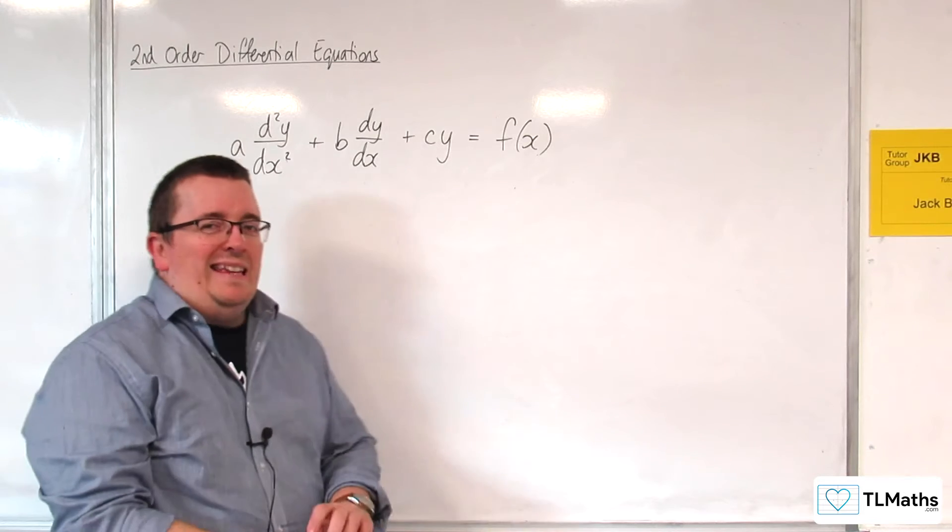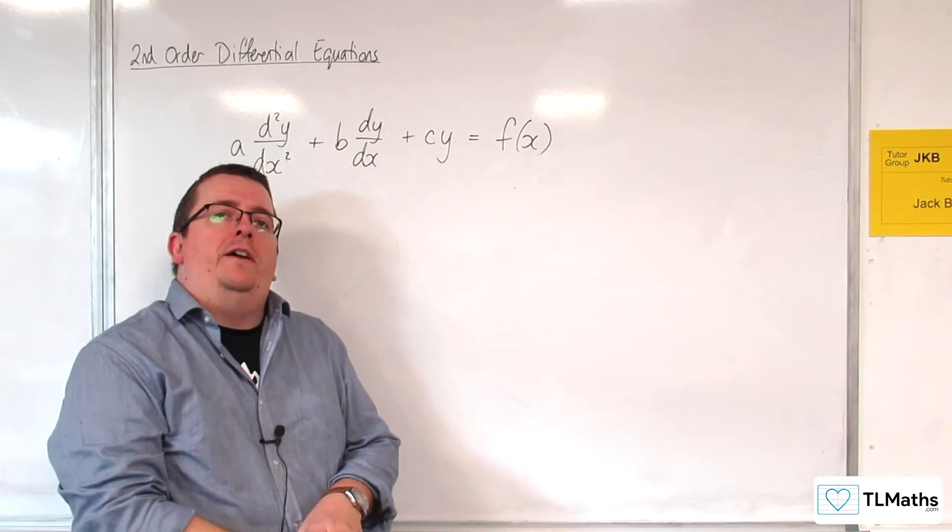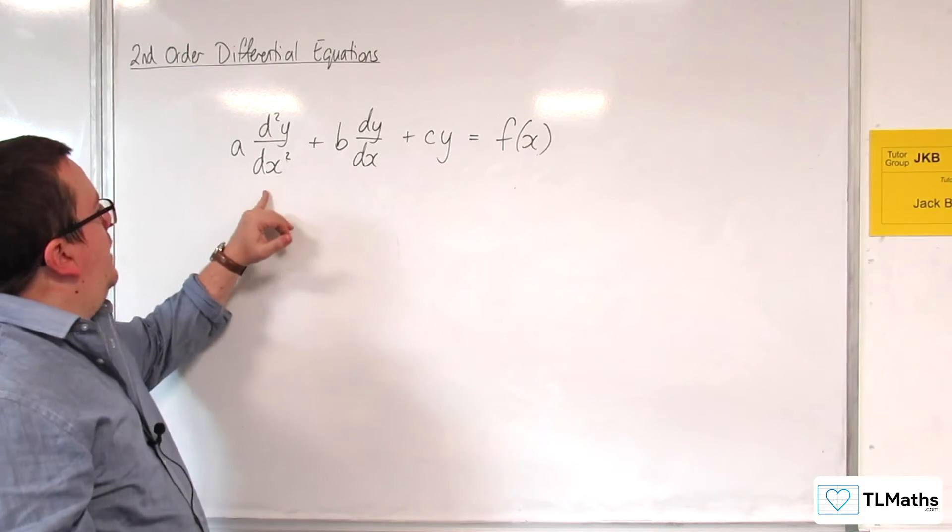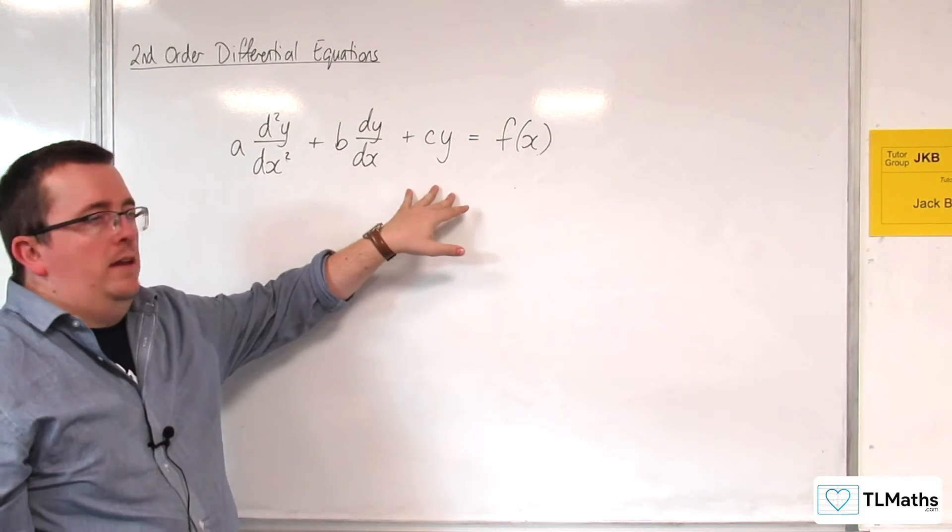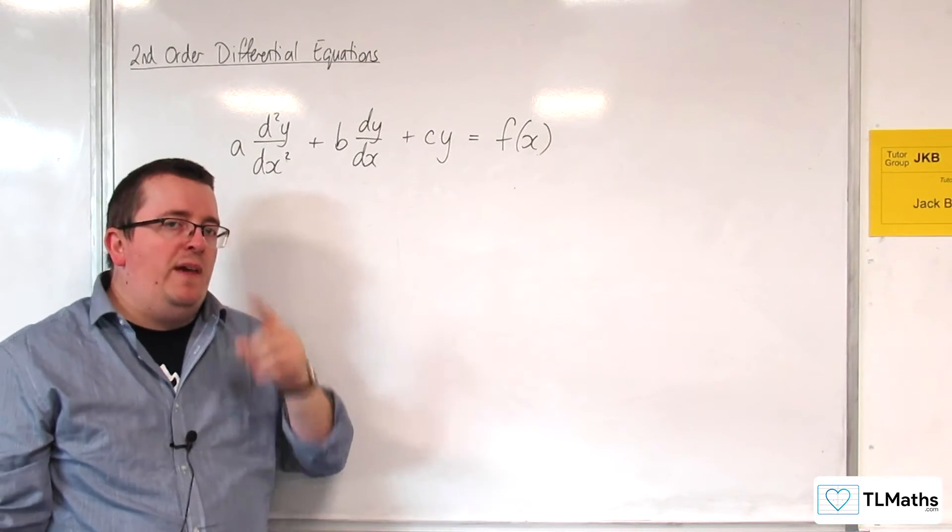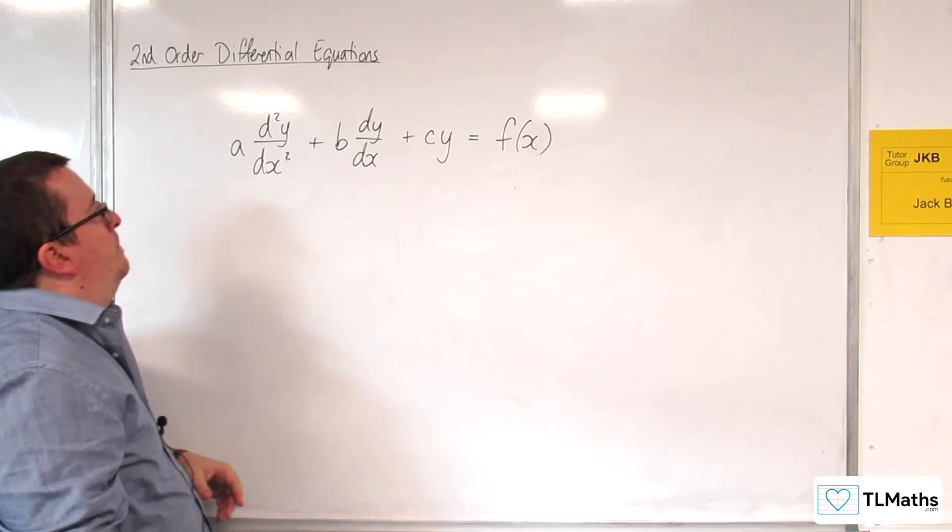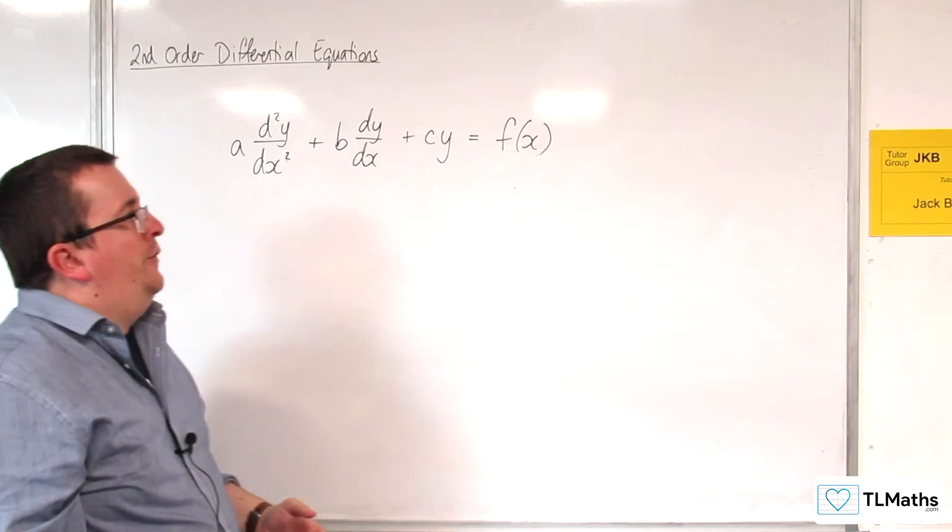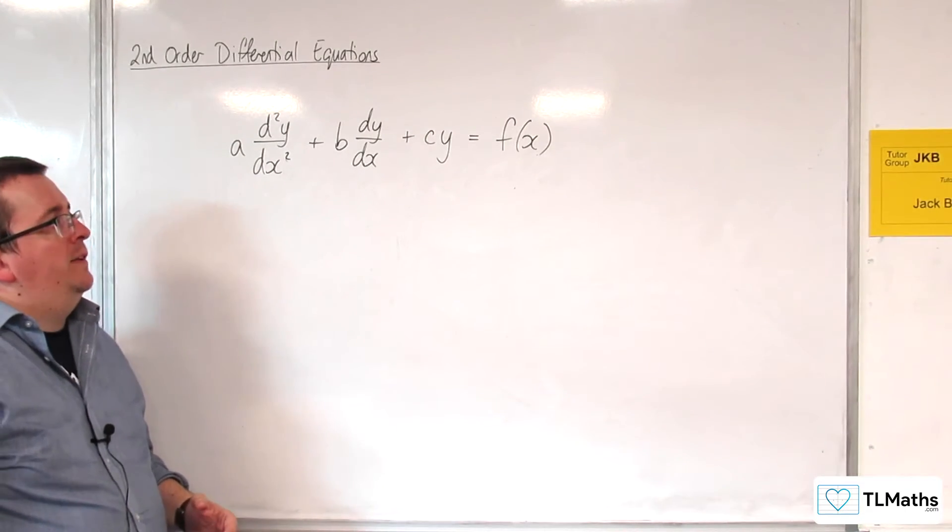So it looks almost like a quadratic equation, doesn't it? It's like ax² plus bx plus c. So very similar to that. And keep that in mind as we work through this section. So that is the general form of a second-order differential equation that we're going to be considering.